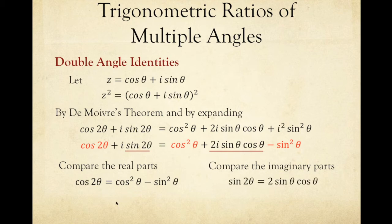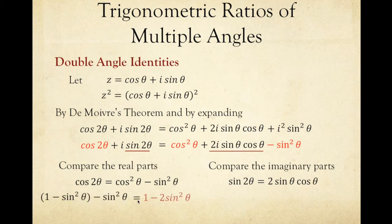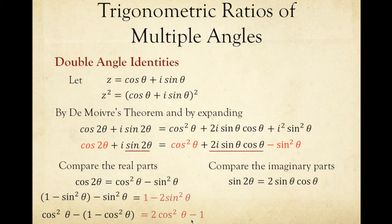Using Pythagorean identities, we can express cosine squared theta as 1 minus sine squared theta, then minus sine squared theta, giving a second formula for cosine 2 theta. Similarly, sine squared theta can be expressed as 1 minus cosine squared theta, giving 2 cosine squared theta minus 1. These are the three formulas for cosine 2 theta. Use the formula when necessary: if only cosine theta is given, use that formula; if only sine theta is given, use that one.